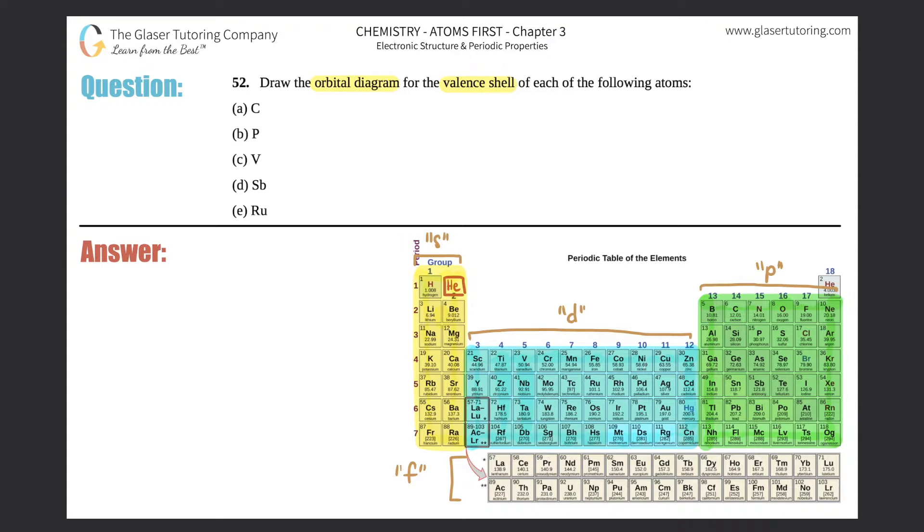If you've done questions before this, we've been over the progression right - s starts with one so this is 1s and 2s, etc. P starts with two so 2p and 3p, d starts with three so 3d and 4d, and f starts with four so 4f and 5f.